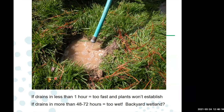Another important factor for site selection is internal drainage. Surface drainage is where water flows downhill into creeks. Internal drainage is how water moves within the soil column. Before installing, it's good to do a percolation test to determine how well water drains internally in the soil at your chosen site.